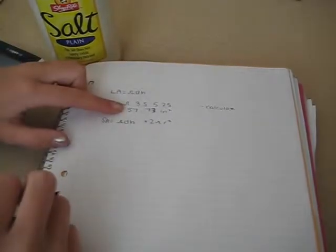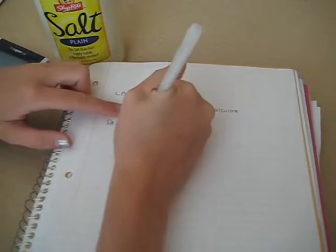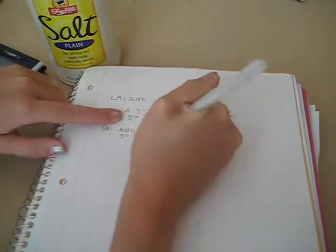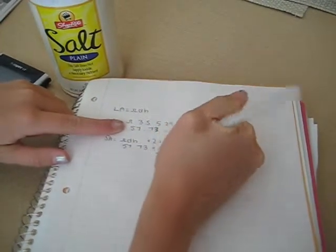Since you already know the lateral area, you plug that in, which is 57.73 plus 2 pi radius squared.